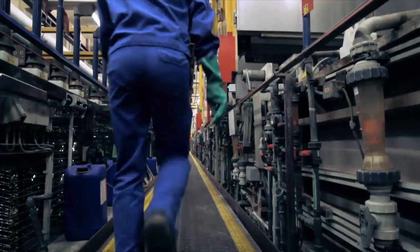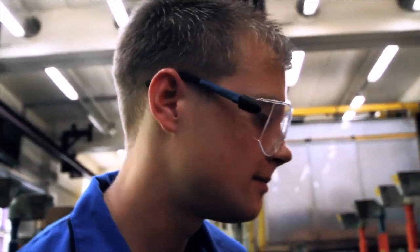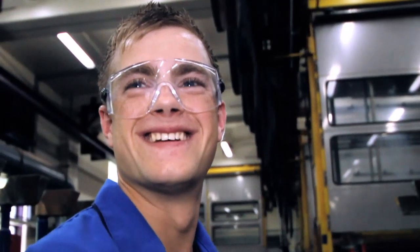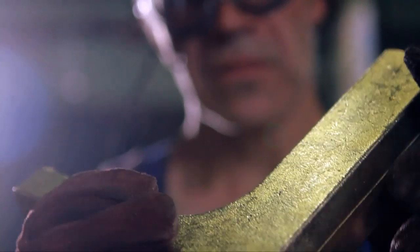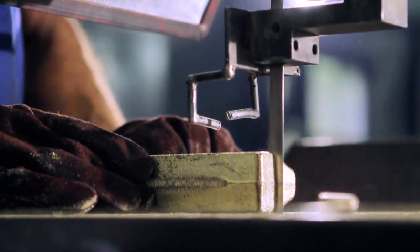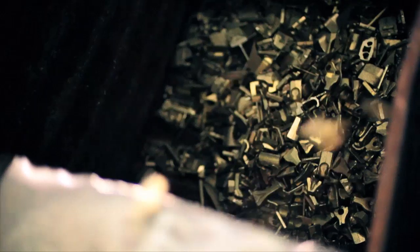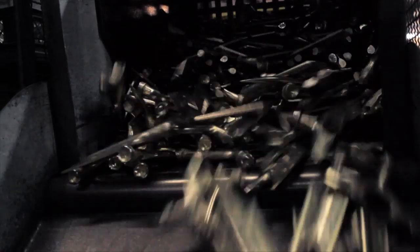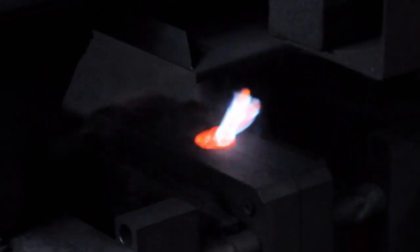The company cleans its electroplating baths multiple times to reuse them again and again, conserving resources and water. There's a special focus on recycling. Around 90% of all waste from Hansgrohe production is recycled. All brass offcuts find their way back into the furnace to be melted down again.